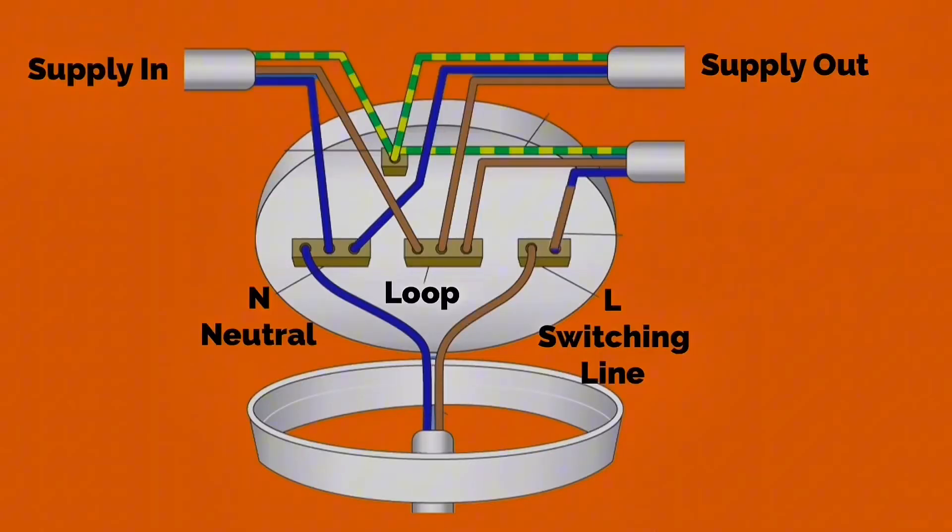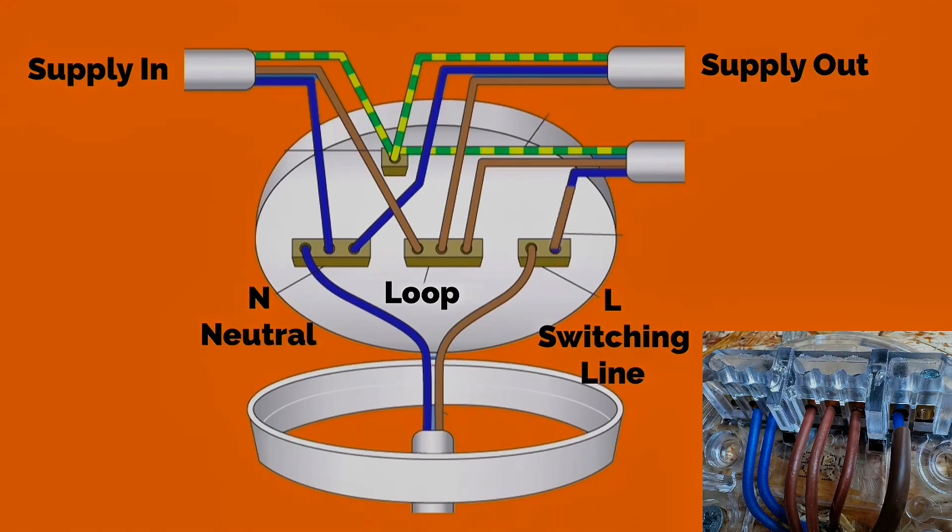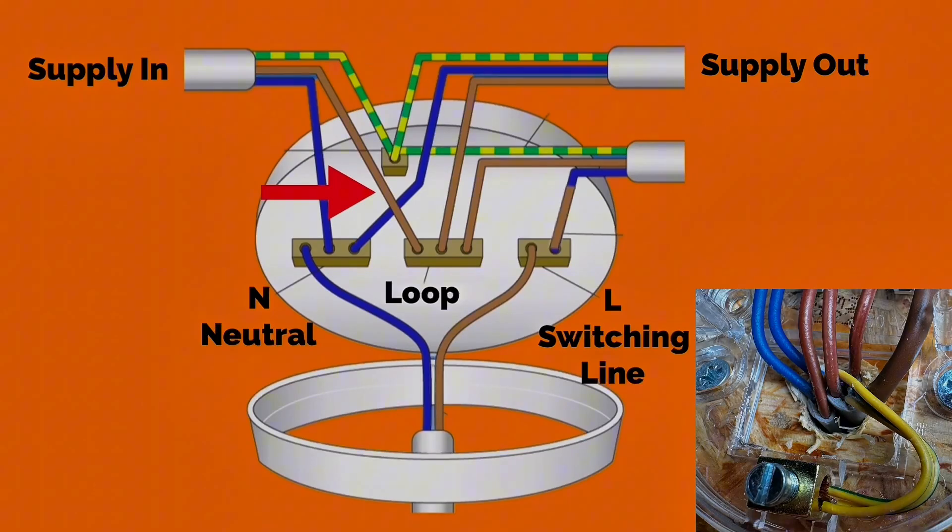If the supply comes in on the left-hand side, it will bring in a permanent neutral connection which is terminated within the neutral block, a permanently connected line conductor connected into the loop terminal in the center, and a circuit protective conductor terminated into the earth connection within the ceiling rose itself.